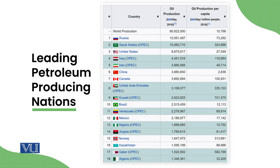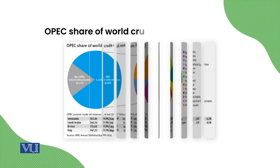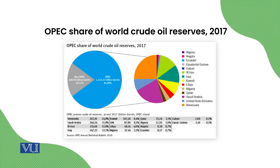The United States is importing about 50% of its oil. In the world there are two parts of oil production: OPEC countries — Venezuela, Saudi Arabia, Iran, Iraq — and non-OPEC countries. America and Russia are non-OPEC countries.